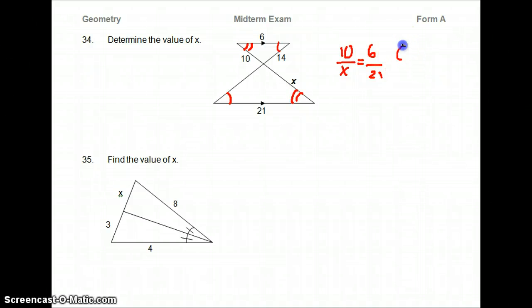So we're going to do 10 over X equals 6 over 21. So 6X equals 210. Divide both sides by 6.